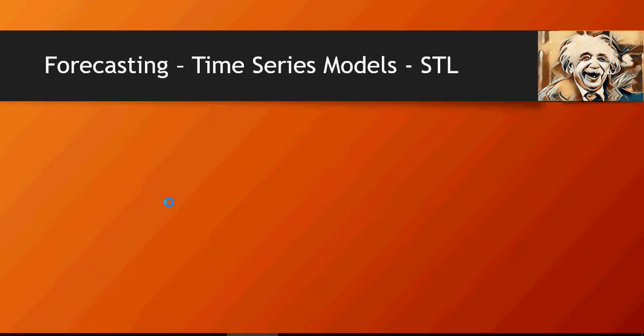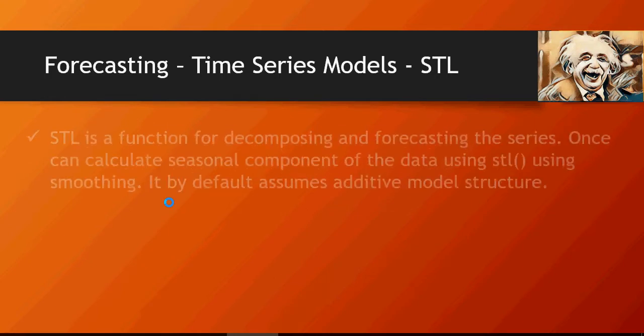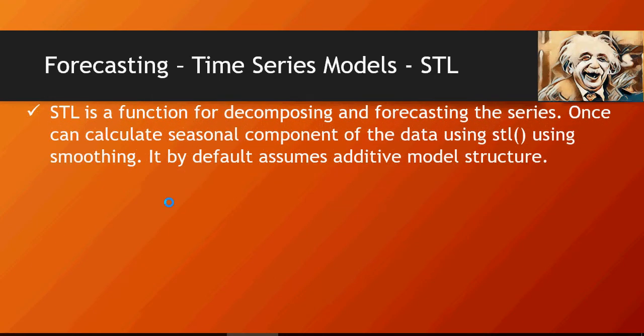And then STL. STL is seasonality, trend, decomposing function. And it is very important to make sure that the data is smoothened out. So for example, I am going to show you in our data set. When you draw a time series graph, it should not be highly variable. The plotting of the data should not be highly variable or high variation or high difference. It has to be a smooth curve. I am going to talk about that in detail.